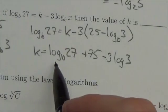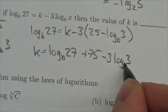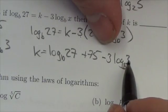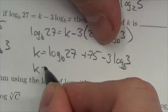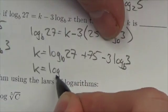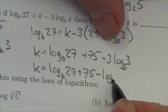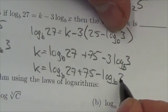Okay, now watch this. If you take that 3 up top there, this becomes, interestingly enough, this becomes the log base b of 27 plus 75 minus the log base b of, well, 3 cubed is 27. So those two cancel and we're just left with k equal to...